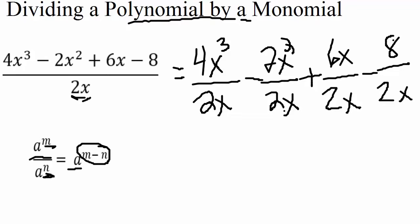Essentially we're going to divide our number by our number and we're going to use our quotient rule to divide our variable by our variable. So that looks like this. 4 divided by 2 is 2. And using the quotient rule on our x terms, so just subtract the exponents, 3 minus the 1 gives us x².